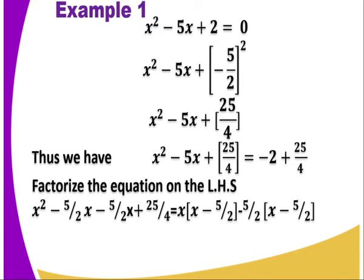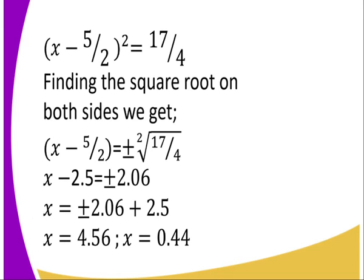What I have is a perfect square, which is x minus 5 over 2 squared, which equals 17 over 4. When I take negative 2 plus 25 over 4, I get 17 over 4.